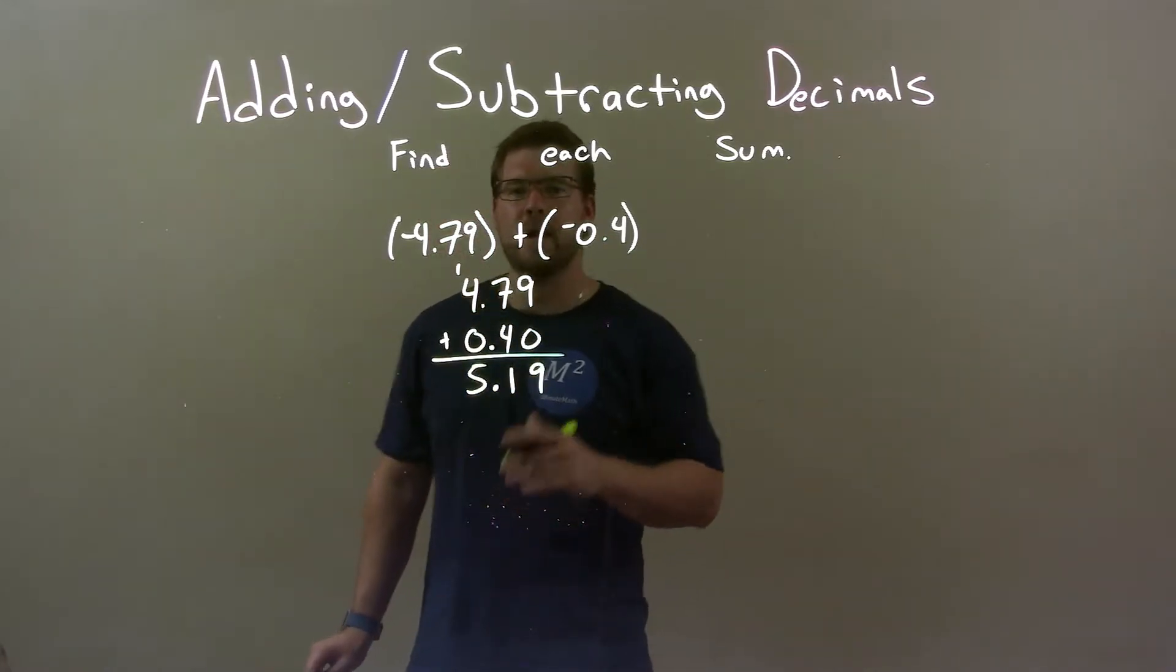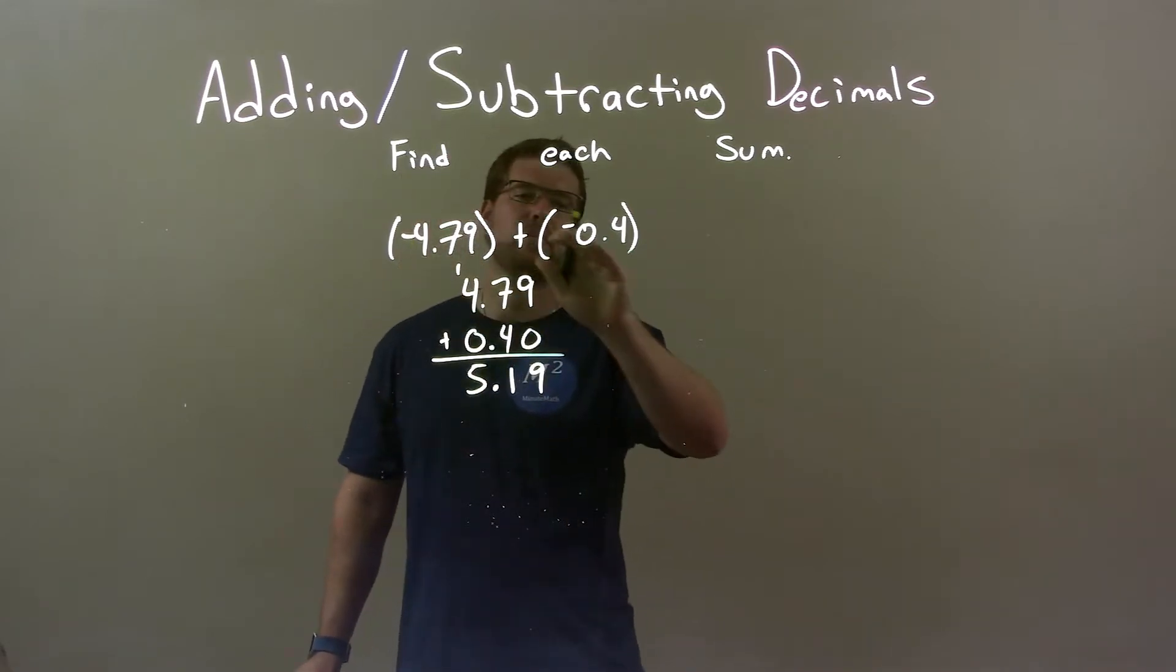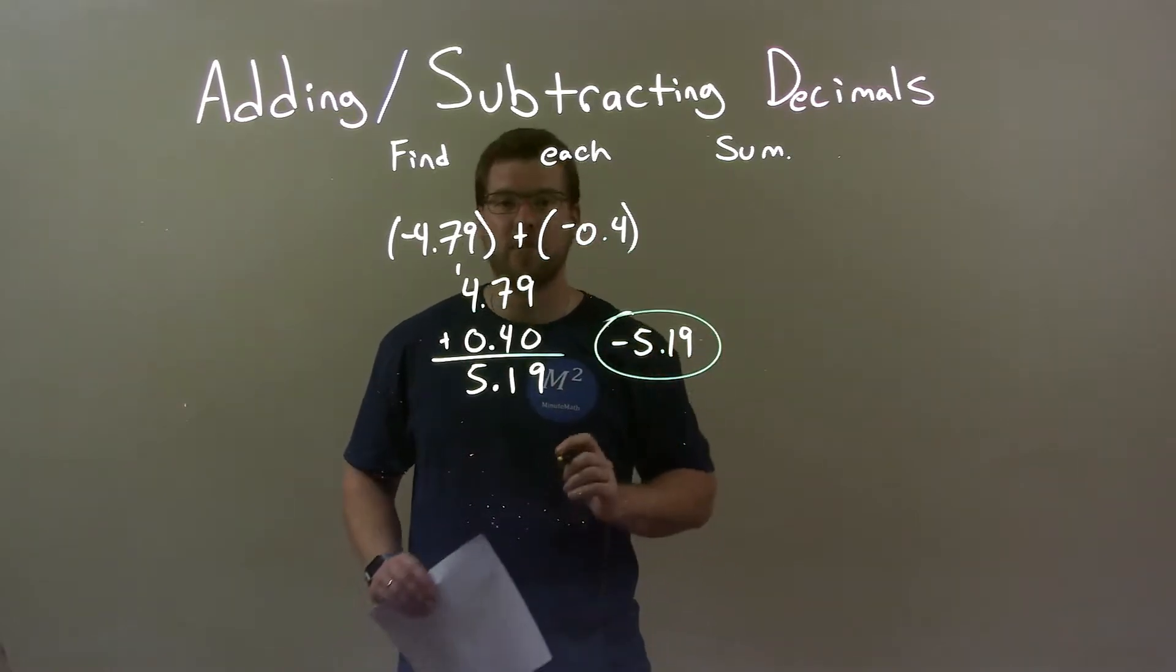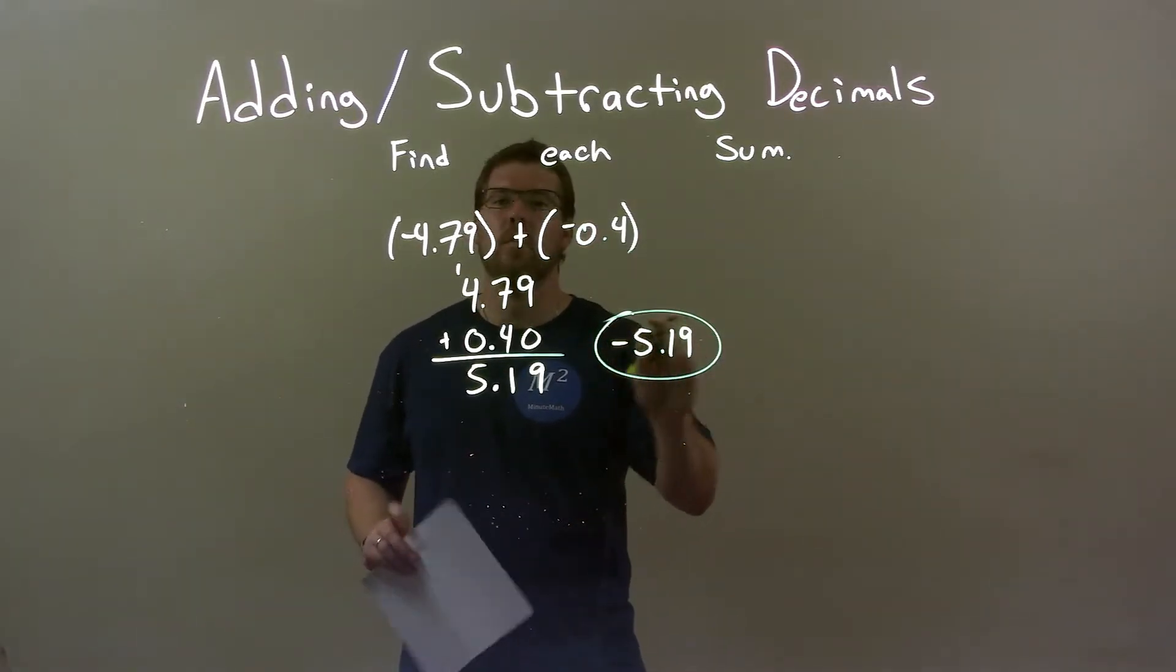And so, we have 5.19 but, again, both are negative. So, we have negative 5.19 right there and there we have our final answer, negative 5.19.